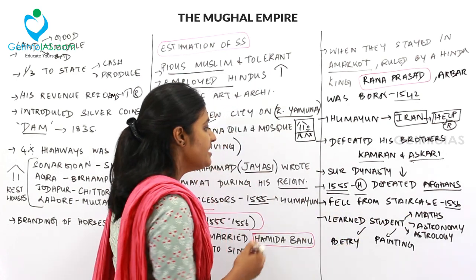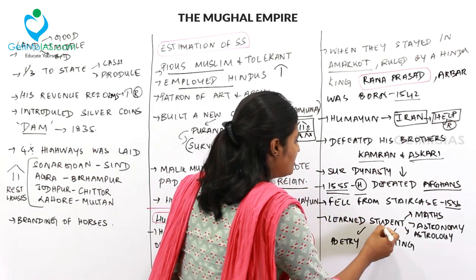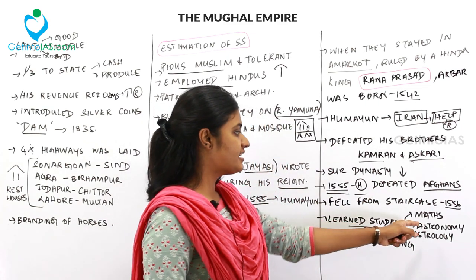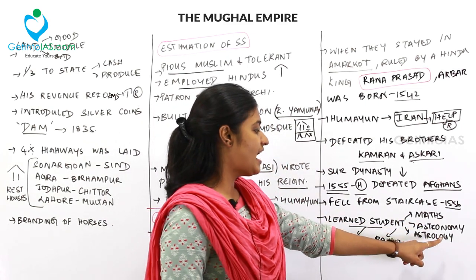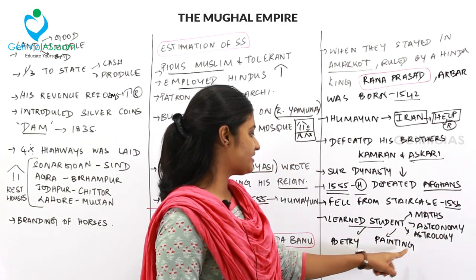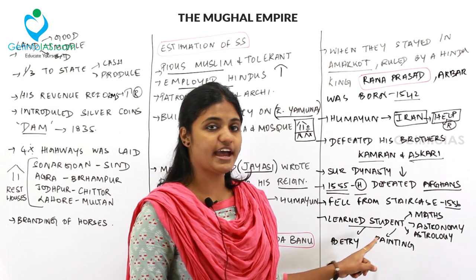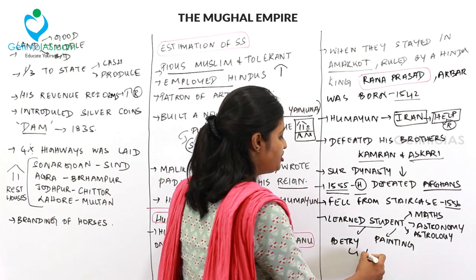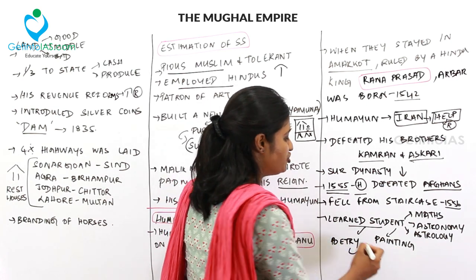Humayun was a learned student of mathematics, astronomy, and astrology, and also practiced painting and poetry writing in Persian.